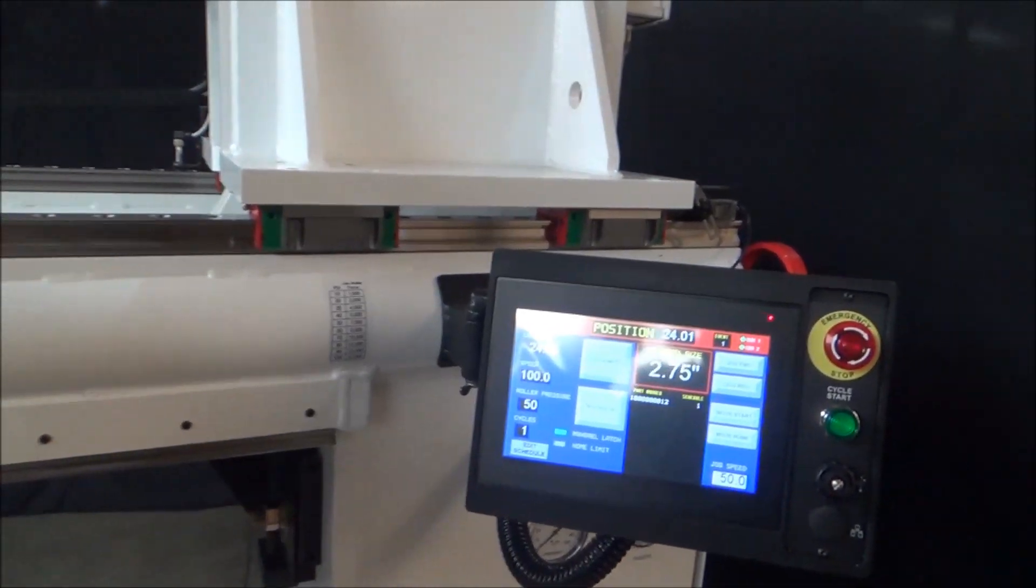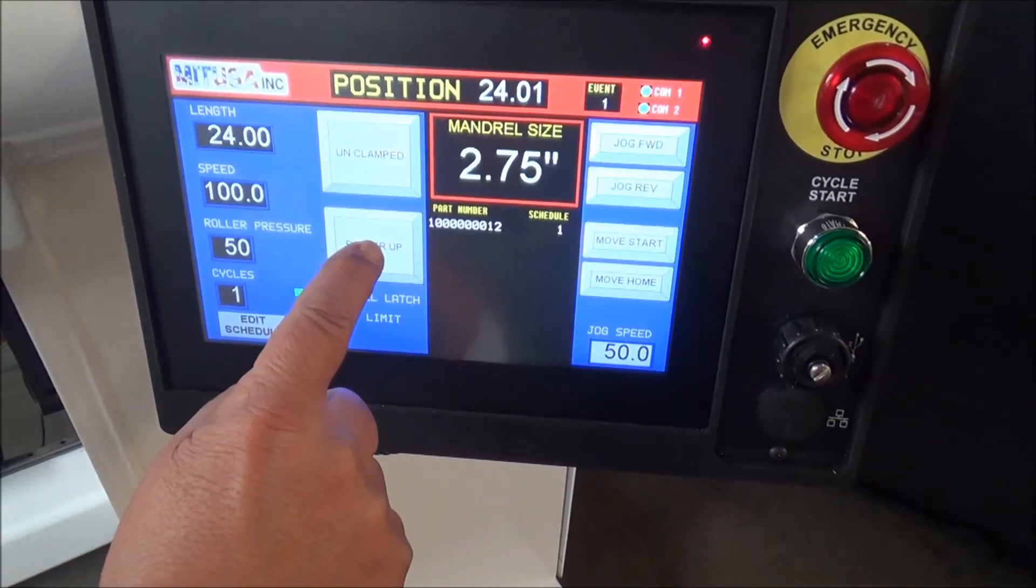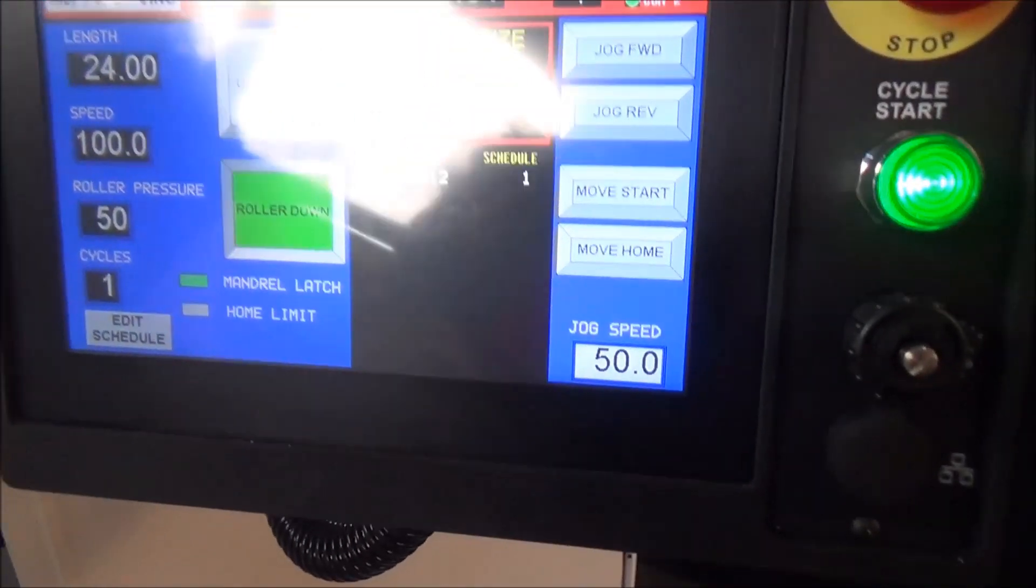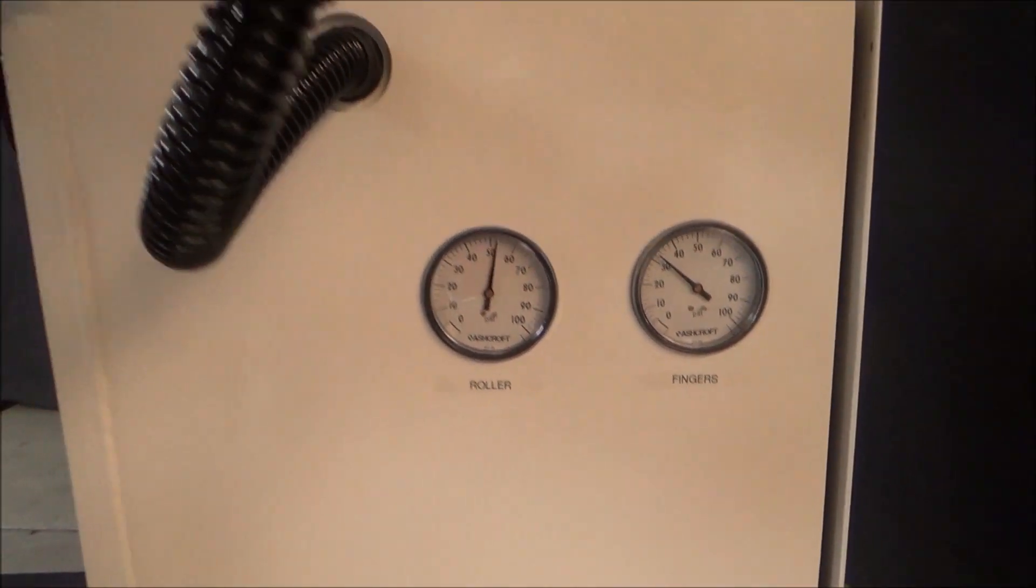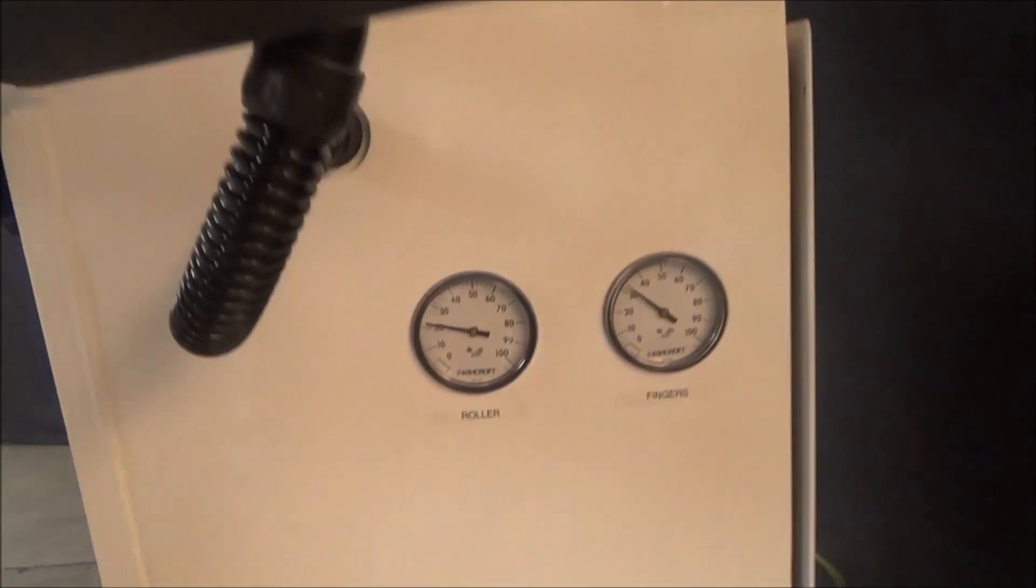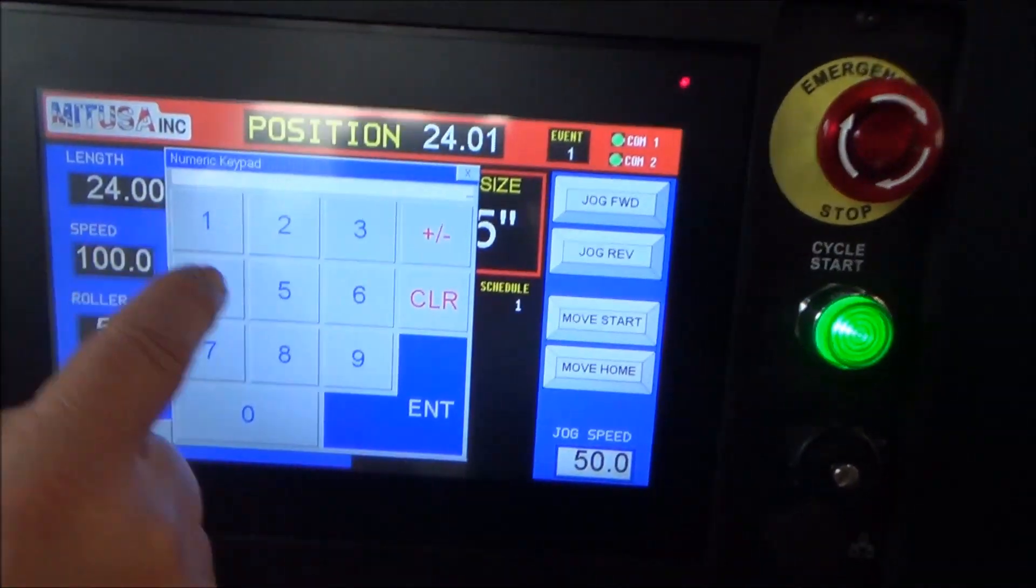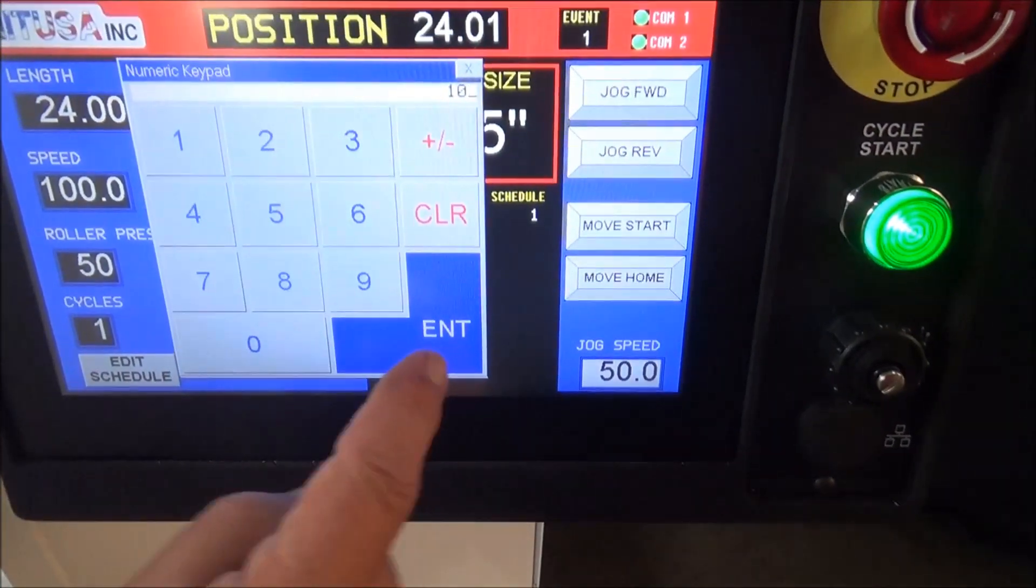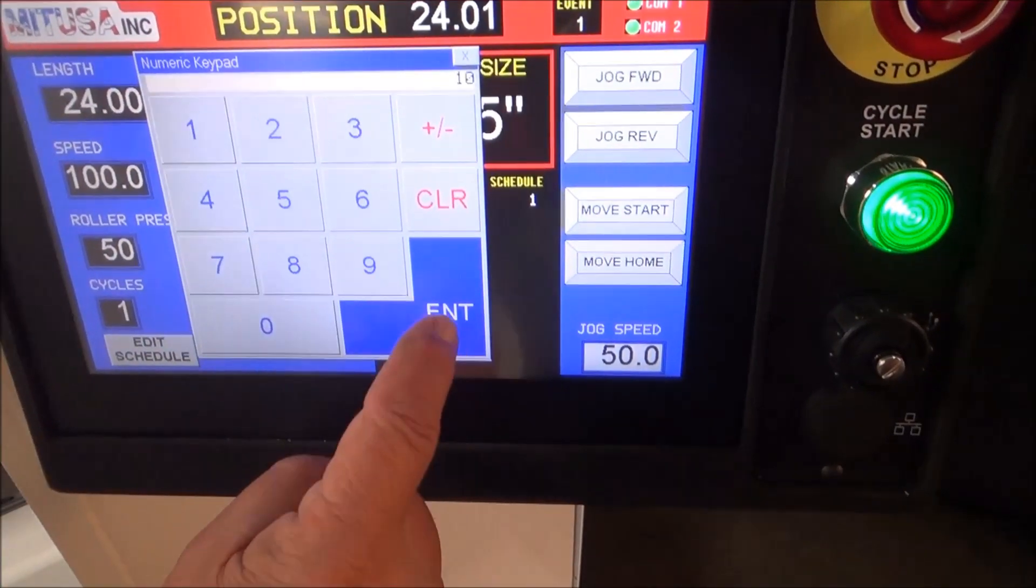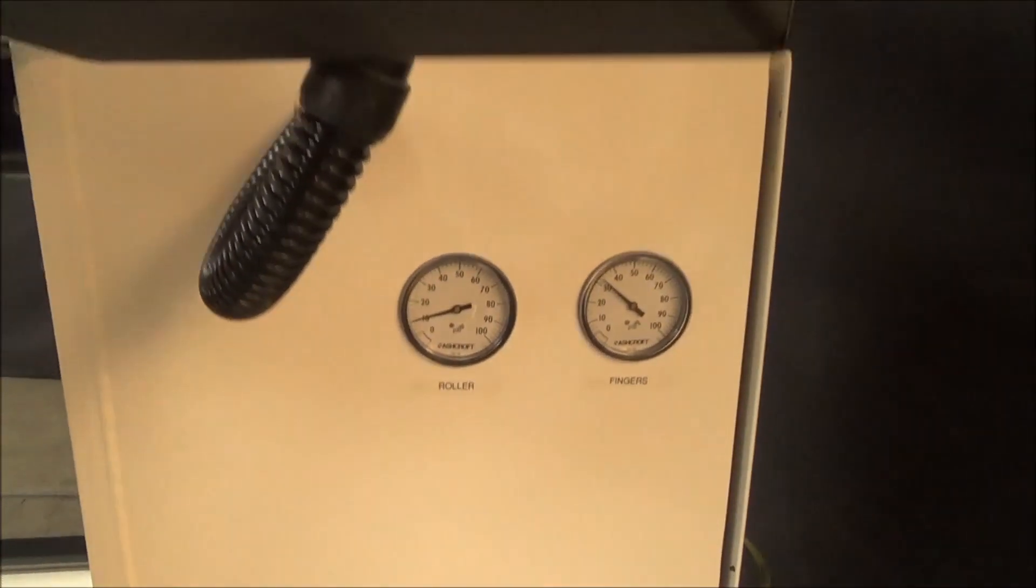You can see right here on the control where I can select the roller pressure. If I hit the roller it activates. You can see the gauge down here goes to 50 psi. I can change the pressure, take it to 10 psi, and now the gauge is showing us 10 psi.